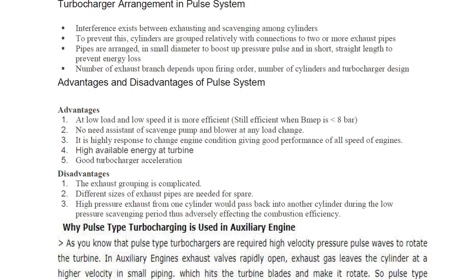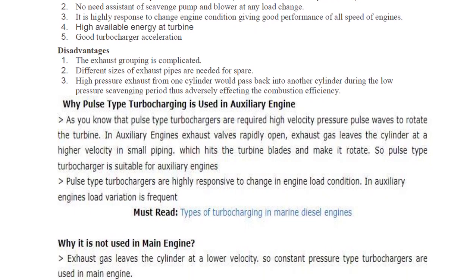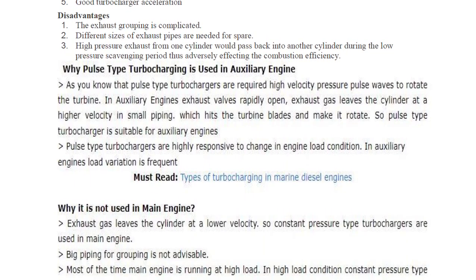Disadvantages of the pulse system: exhaust grouping is complicated, different sizes of exhaust pipes are needed, and high pressure exhaust from one cylinder can pass back into another cylinder during the low pressure scavenging period, adversely affecting combustion efficiency — there are chances that exhaust from one cylinder may enter another.